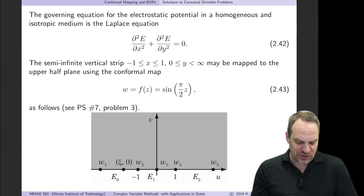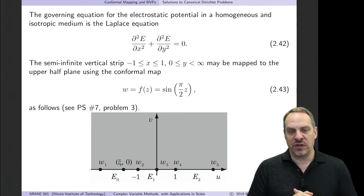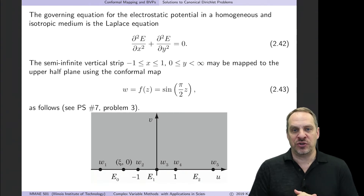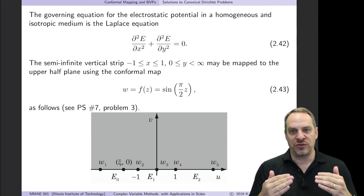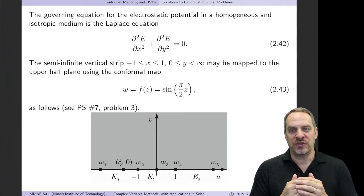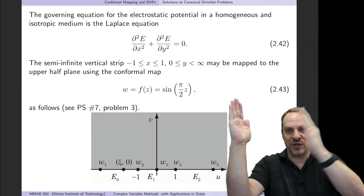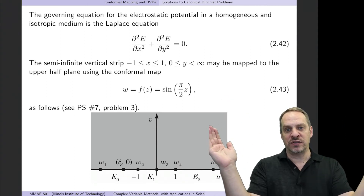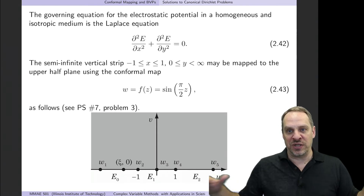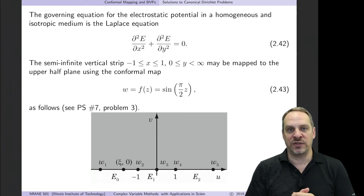The mapping that does this for us is w = f(z) = sin(πz/2). I'm not going to show the details here, but I'd encourage you to take a look at sin(πz/2) and verify that it does indeed map the semi-infinite strip into the upper half plane. What it essentially does is take the two vertical sides going to infinity and lay them down, so that the boundary of the domain becomes the real axis and the upper half plane is the interior.